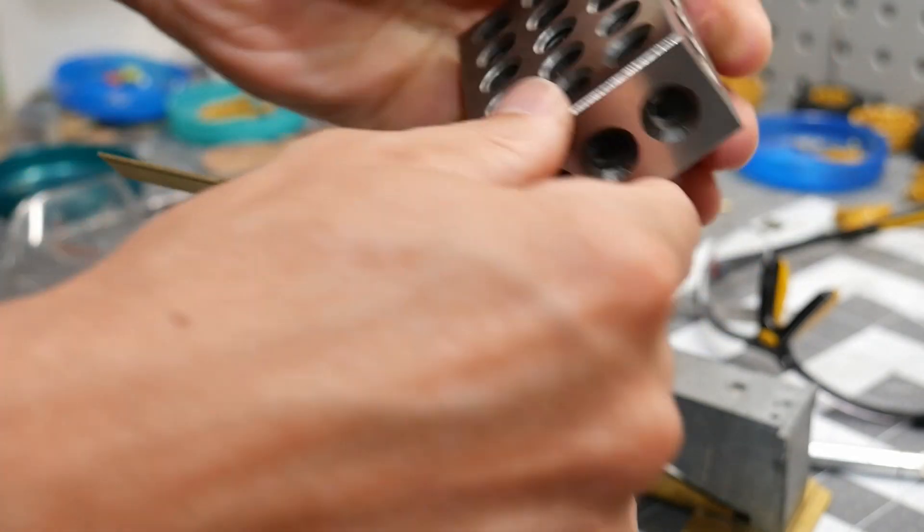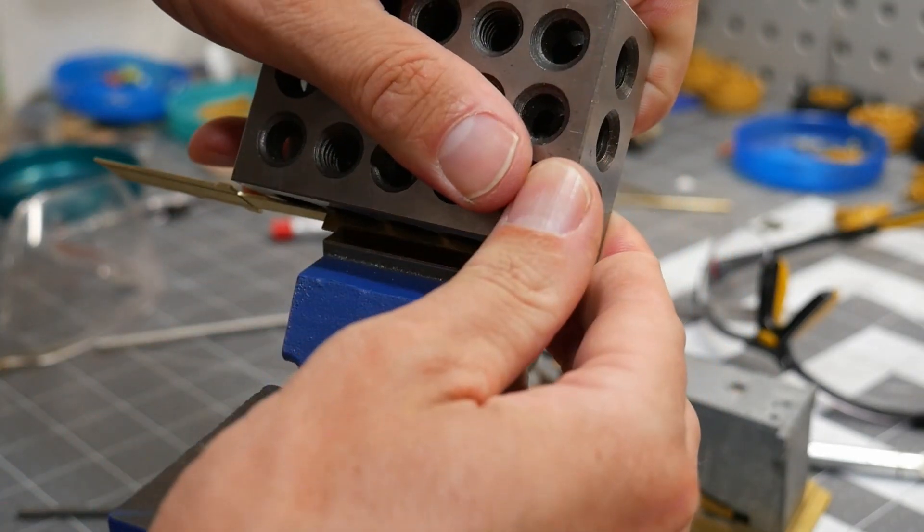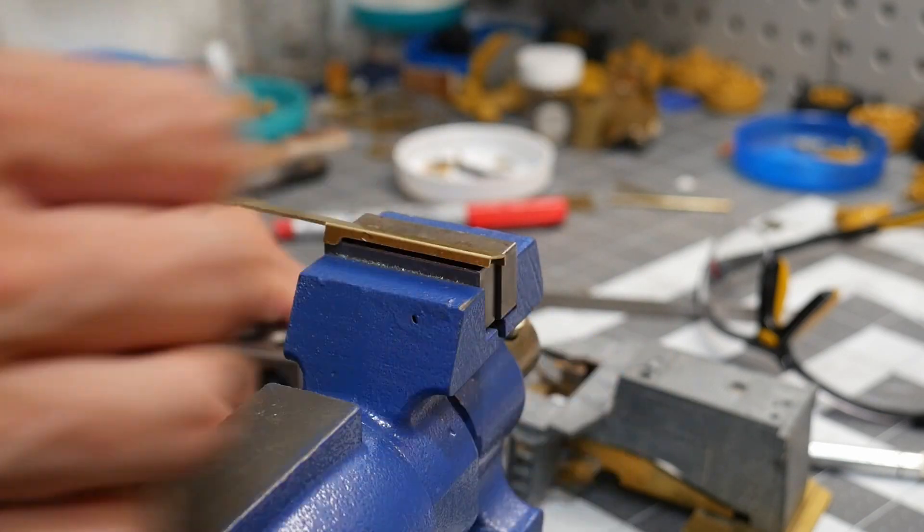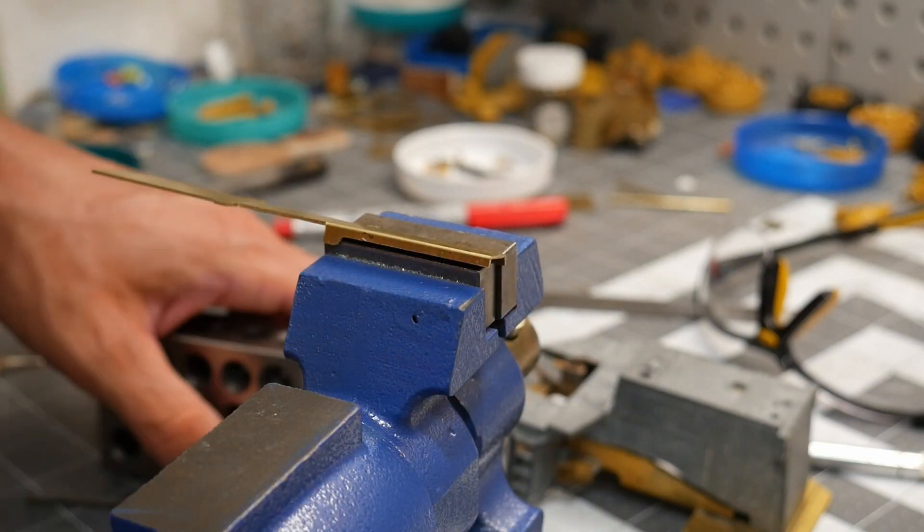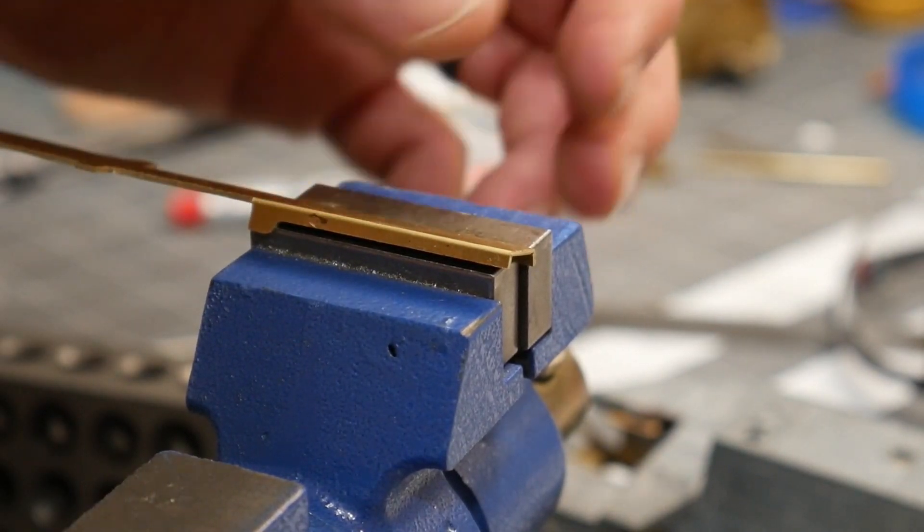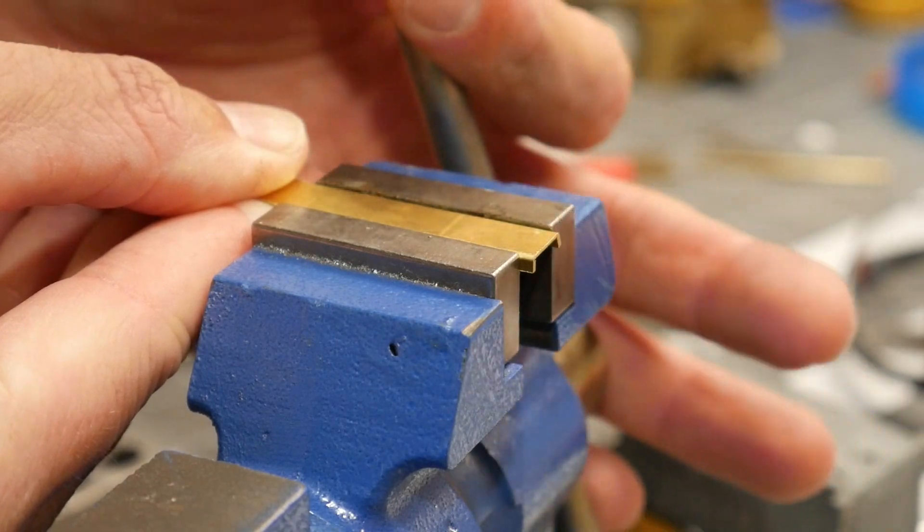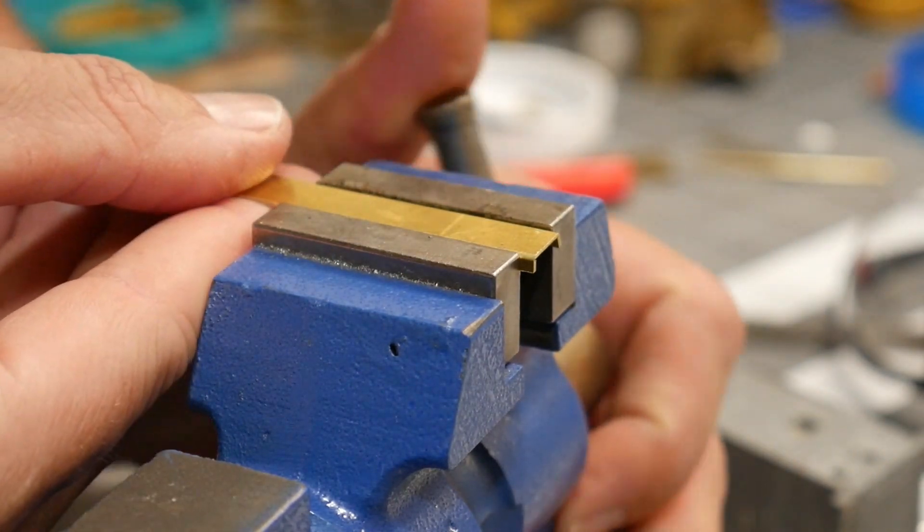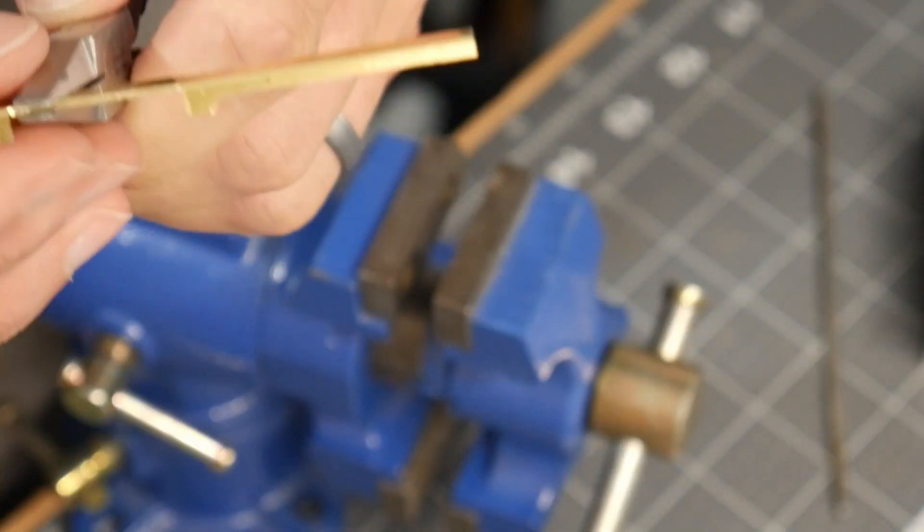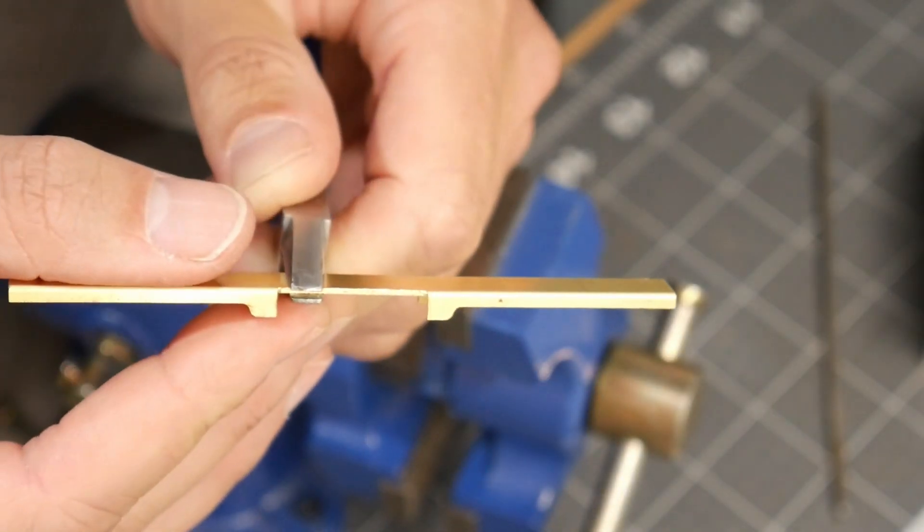I ran into a little bit of an issue where the part that I was bending was a little too narrow to fit over the edge of the vise. So I needed to get a little bit creative and use the vise to try to press all of it together into a 90 degree angle. I needed to be careful to not warp the top of it because that would have ended up creating a not flat piece.